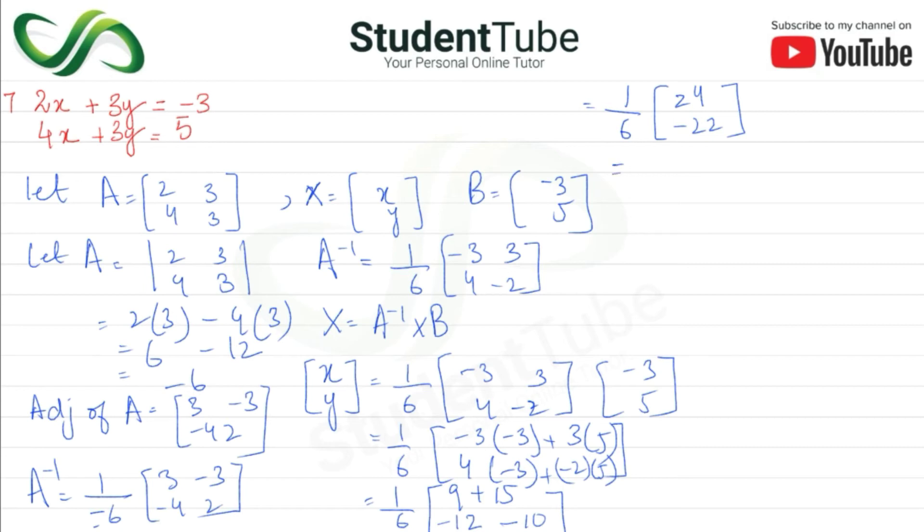So yahaan per ye ho gaya 24 upon 6 or 22 upon 6. So 2 threes are 6, 2 ones are 2, 2 ones are 2, 2 threes are 6. Yaa phir 6 ones are 6 or 6 fours are 24. X or y equal huye 4k or 11 minus 11 upon 3k.